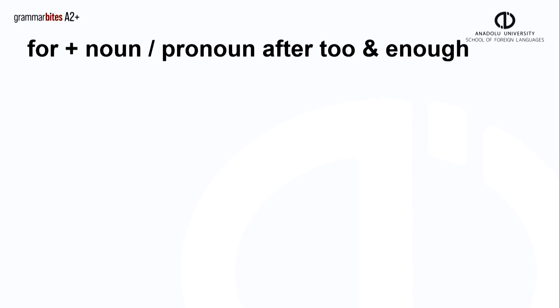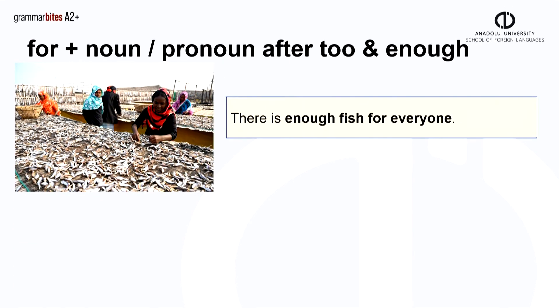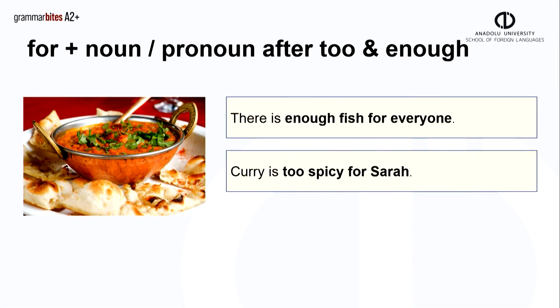After too and enough, we often add the person by using a noun or a pronoun. There is enough fish for everyone. The noun fish is after enough, and we add for everyone at the end of the sentence. Curry is too spicy for Sarah. The adjective spicy is after too, and again we have added the person at the end of the sentence.